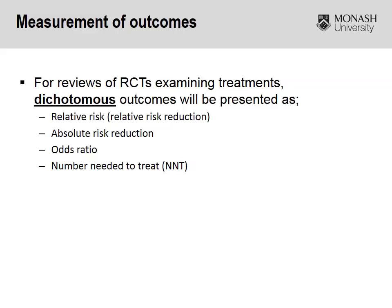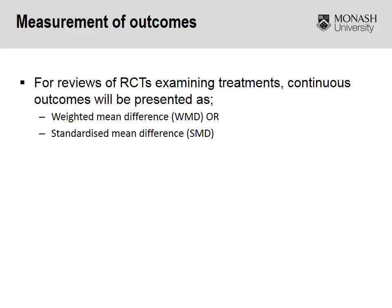I'm going to spend the next couple of slides talking about how to interpret a forest plot. Forest plots can be performed on dichotomous data, in which they'll be represented as a relative risk, relative risk reduction, odds ratio, et cetera. Forest plots or meta-analyses can also be done on continuous data. There are two types: weighted mean difference or standardized mean difference — the mean difference being the difference between the means of the two groups.